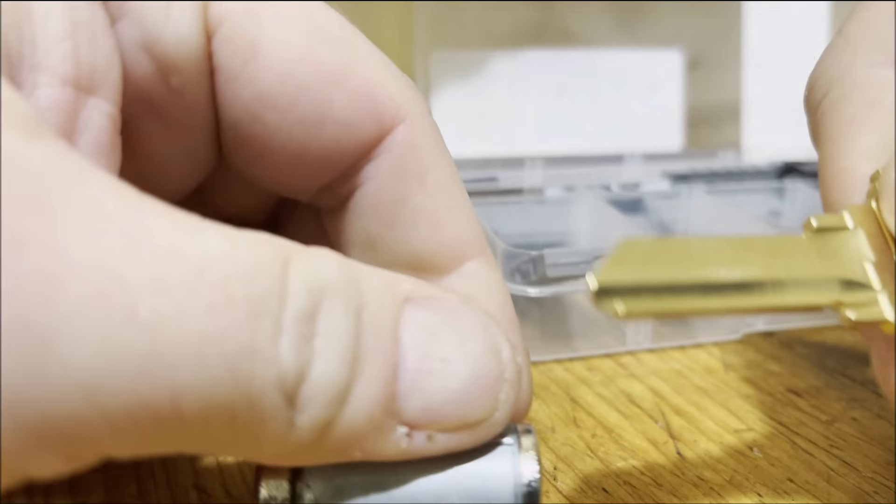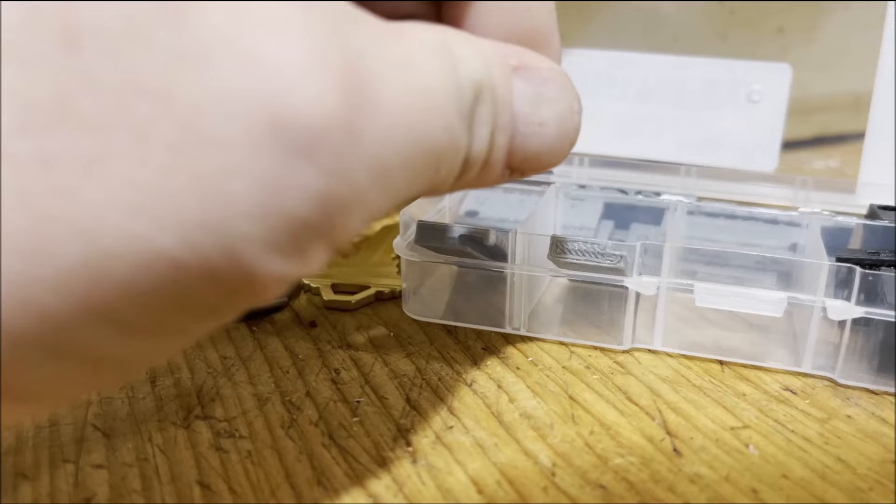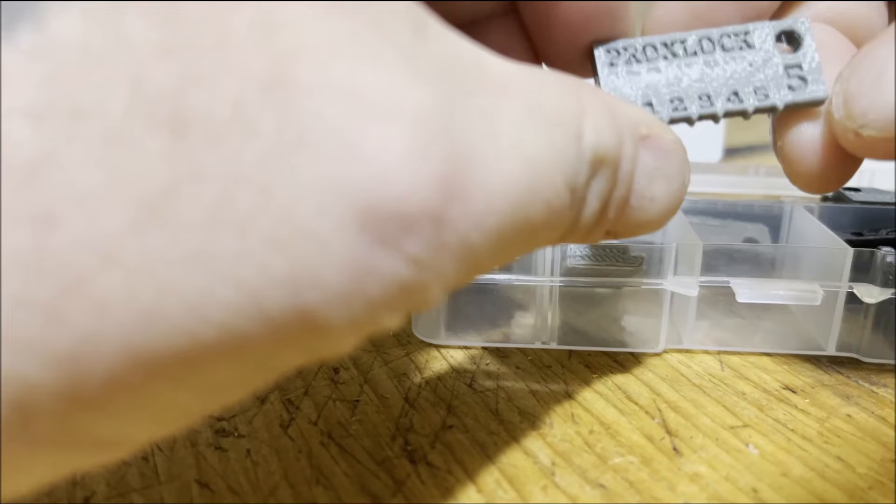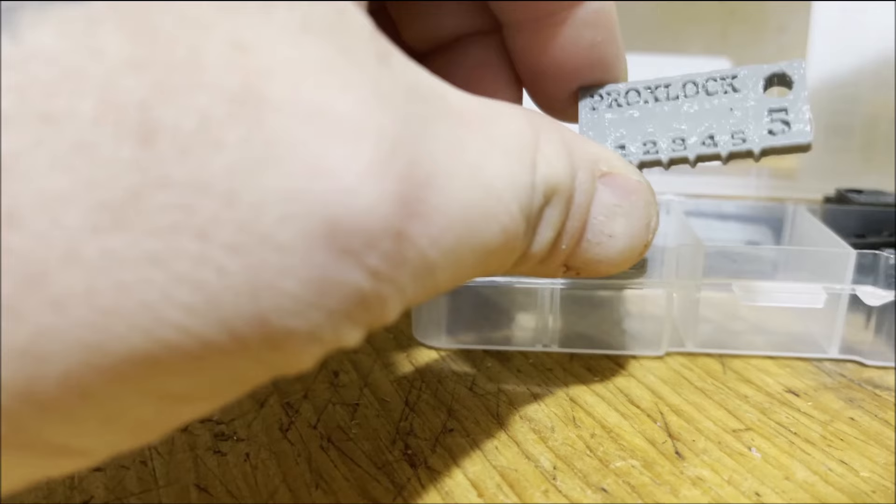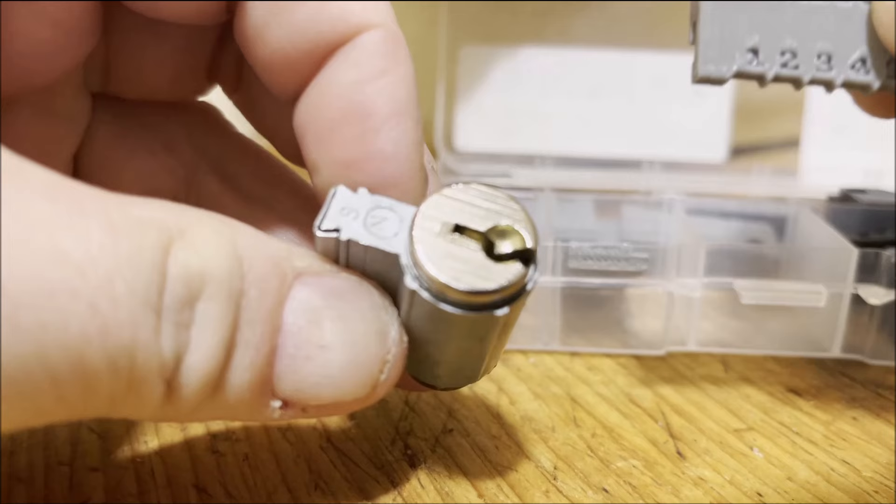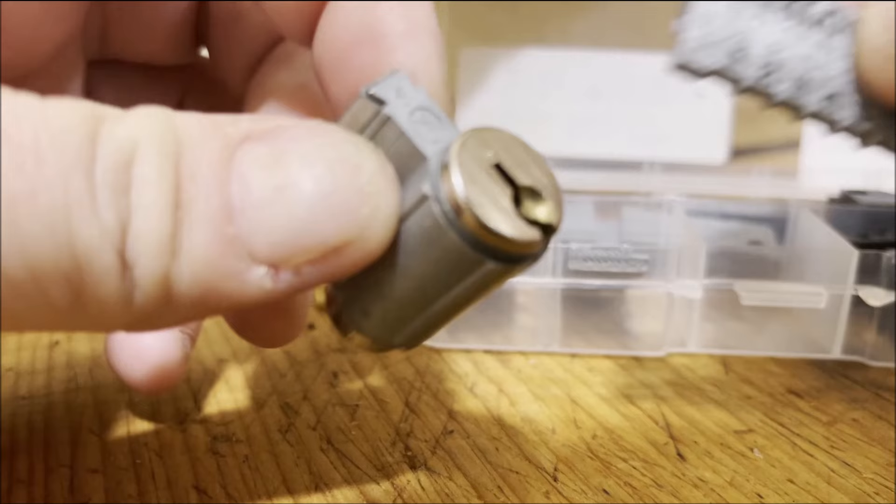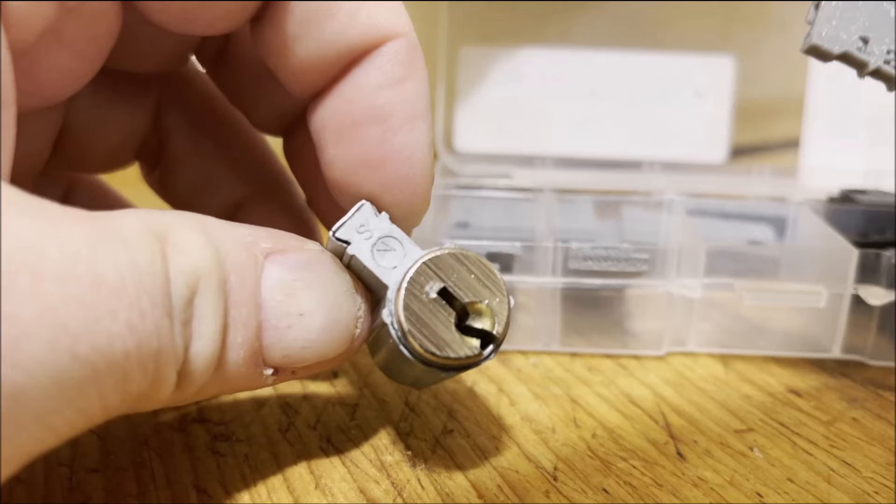We're going to use some 3D printed key guides. These will give us the correct depth and the spaces that we need. This is a number five. We want to get the key code or use the pin information. This code is 34477, or in other words, the pinning method is pins 34477.